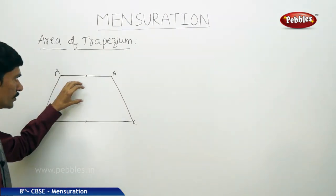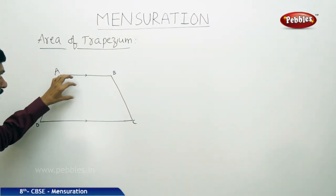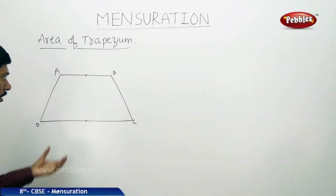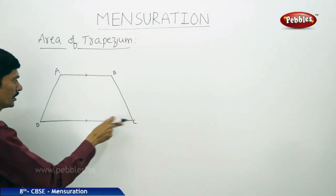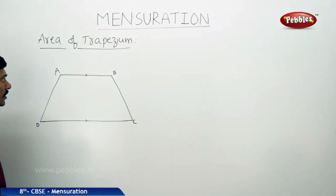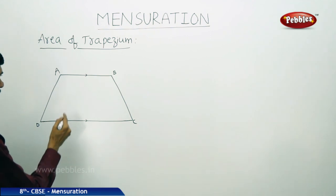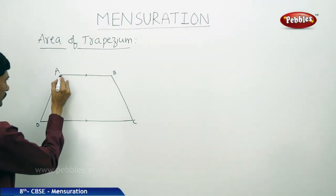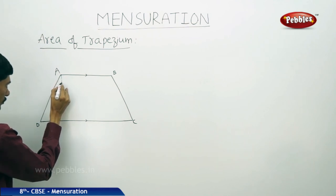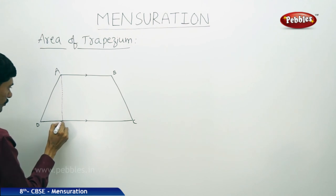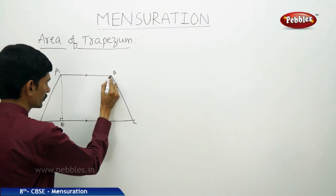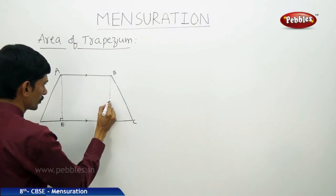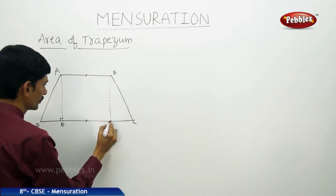Now if a trapezium is in this shape, let us find the area of the trapezium once again, and check whether we get the same formula or not. The trapezium is ABCD in which AB is parallel to DC. Draw two perpendiculars from A and from B — AE from A and BF from B.